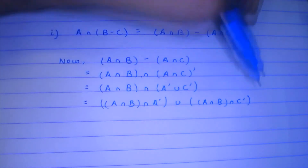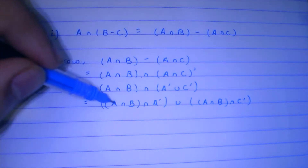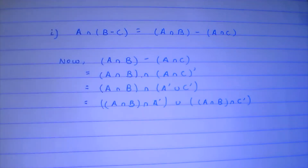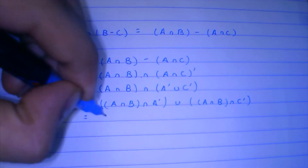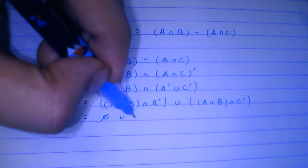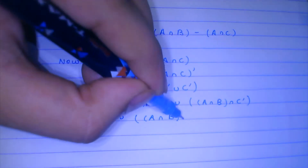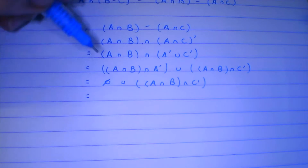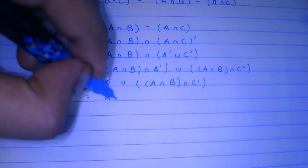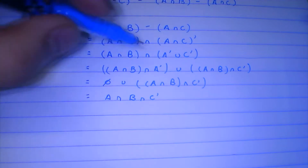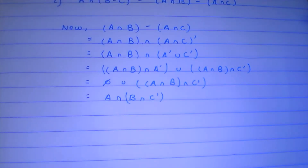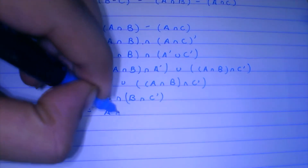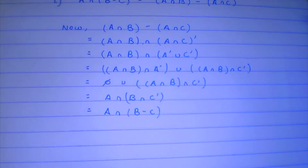Now look at this: A intersection with A complement — A has nothing in common with its complement, so this whole term becomes phi (the empty set). This becomes phi union (A intersection B intersection C complement). The phi with union just vanishes, leaving A intersection B intersection C complement. Re-grouping the terms, we can identify this as our symmetric difference: A intersection (B minus C), and we have proved this one.